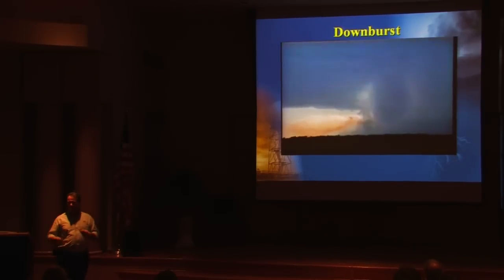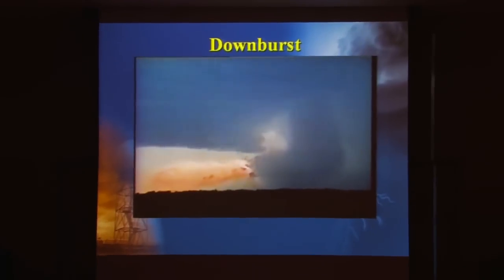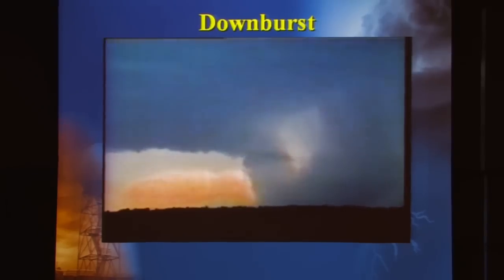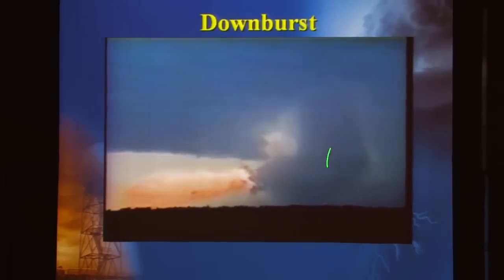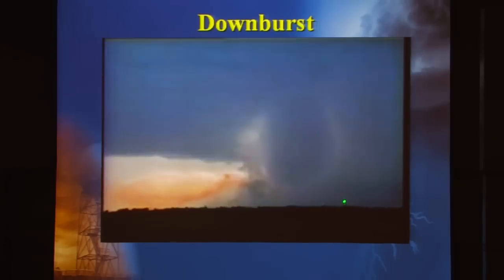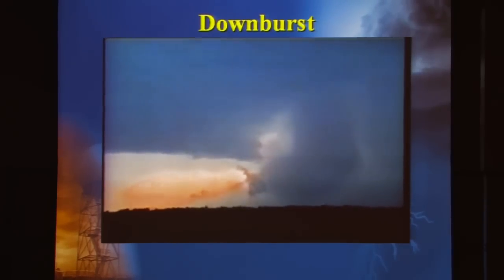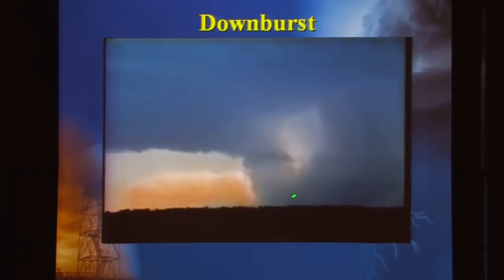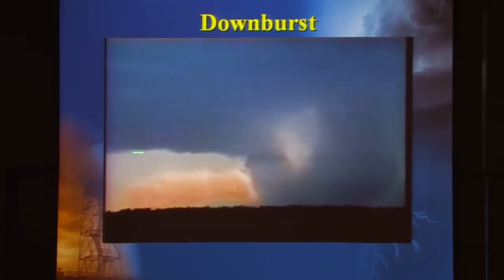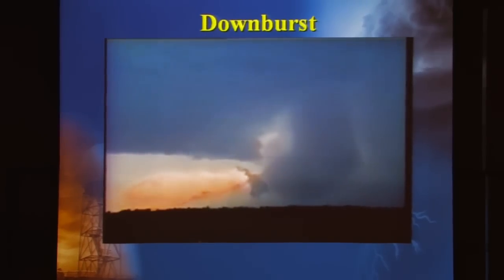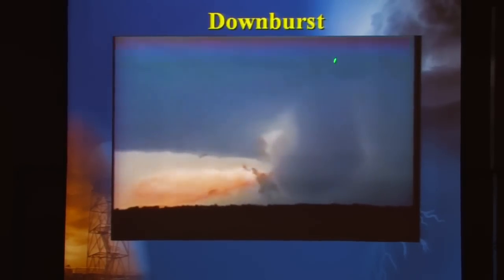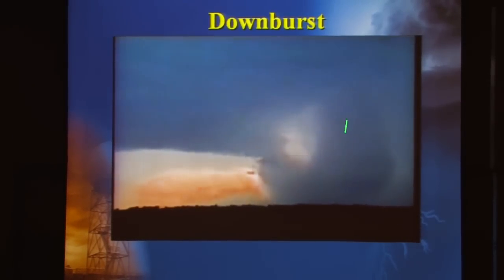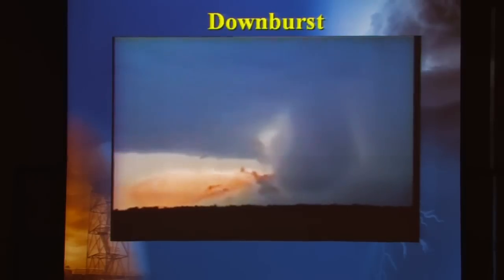Here we have an extreme example of strong winds flowing down and out of a thunderstorm. You can see the rain shaft spilling downward and outward from the thunderstorm cloud. As it reaches ground level, it's spreading air out in all directions, and some of that air spreads backwards and rises upward. This entire section of cloud on the left-hand side, with the well-defined cloud base, is the updraft portion of the storm where air is rising upward, lifting precipitation aloft, while precipitation falls in the forward part of the storm. This is an extreme case of strong straight-line wind.